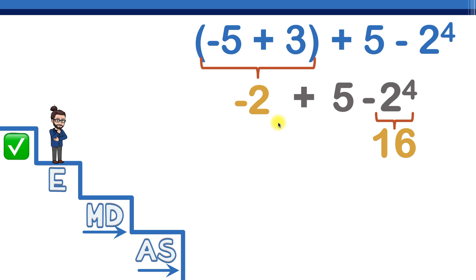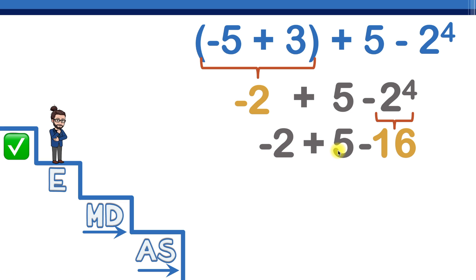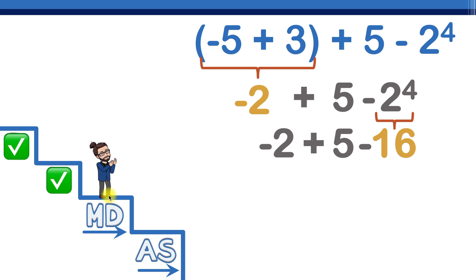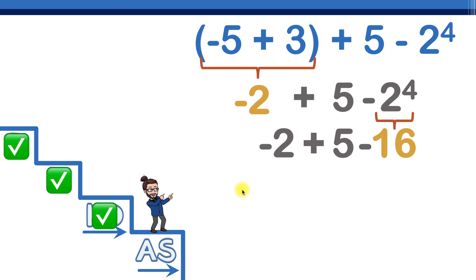Now we bring down everything we haven't used: negative two, the plus sign, the five, and the minus sign. Our new expression is negative two plus five minus sixteen. Do you see any exponents? Nope. So we hop down to step number three — multiplication or division, left to right. We start at the left and ask: do we see any multiplication or division? Nope, so we hop down to step number four.